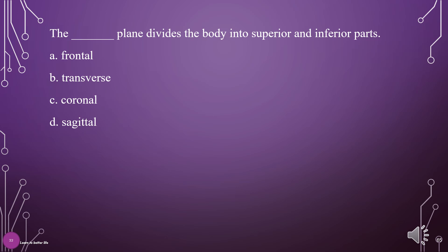What plane divides the body into superior and inferior parts? A. Frontal, B. Transverse, C. Coronal, D. Sagittal. The answer is B: Transverse or axial.